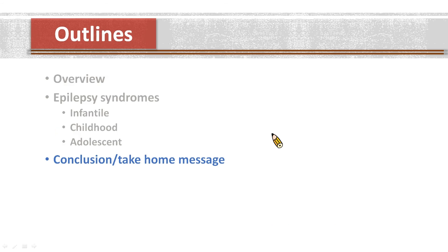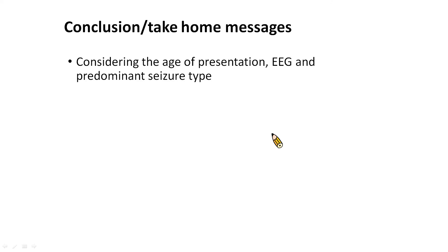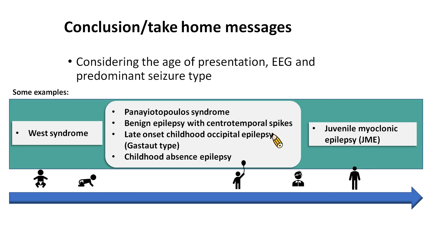I have given an overview and some examples of epilepsy syndromes. To wrap up, here are some take-home messages. There are many epilepsy syndromes, but each has its specific clinical context and EEG characteristics. When making a diagnosis of an epilepsy syndrome, we should consider the age of presentation, EEG findings, and predominant seizure type. These are the examples of epilepsy syndromes in different age groups described in this talk.